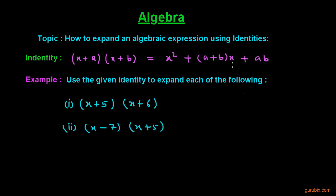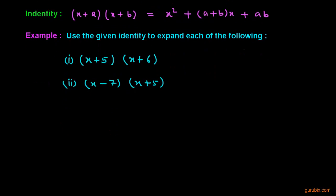Let us start with the first part of the example. The first part is (x + 5)(x + 6). If we use the identity, then we shall write x²